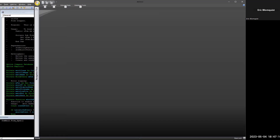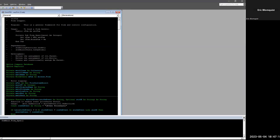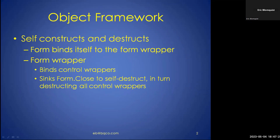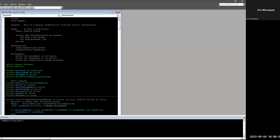What he talked about is largely the basis of what I started with here. What this looks like is an object framework: when you open a form, it binds itself to a form wrapper that in turn instantiates and binds a set of control wrappers. The form wrapper then syncs the form's close event to self-destruct itself, collapsing all the control wrappers along with it.